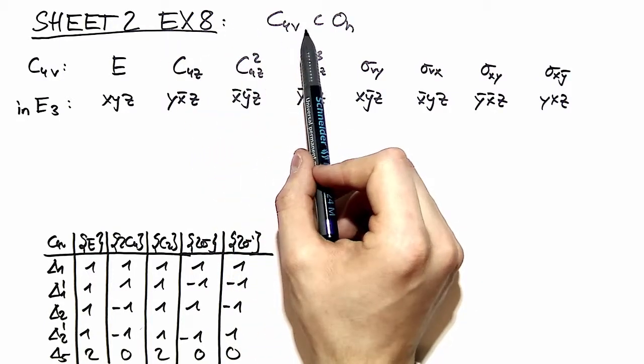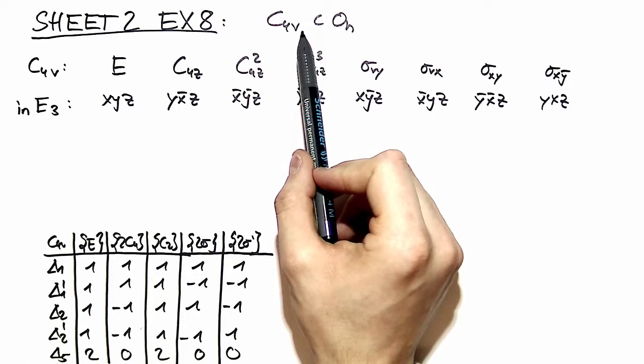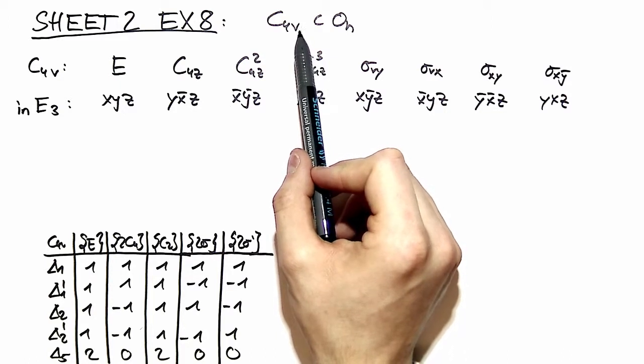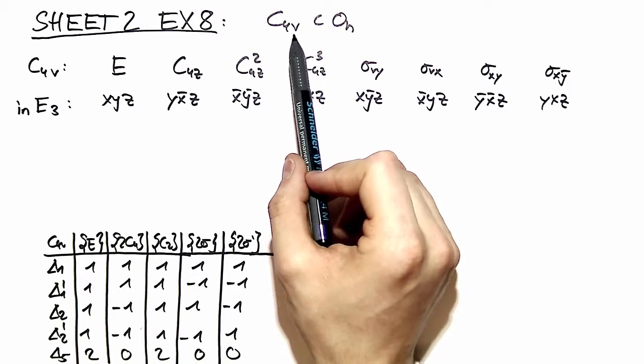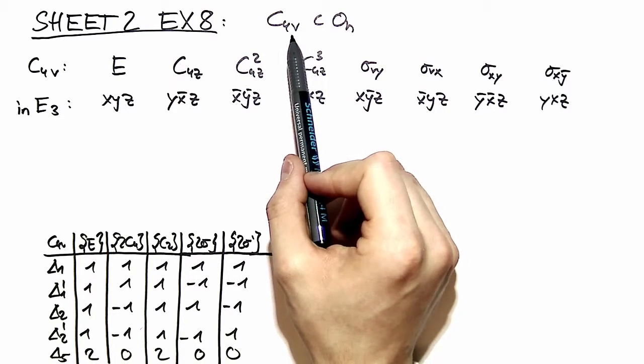Here we are again coming back to C4V being a subgroup of OH, and we use this to construct a three-dimensional representation and reduce it to its irreducible components.